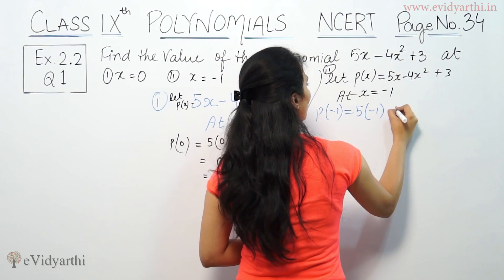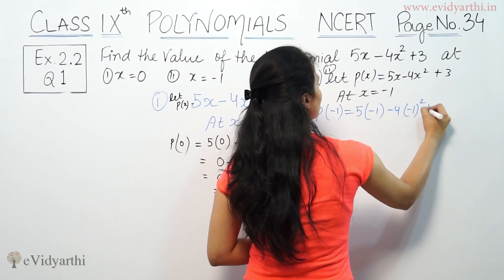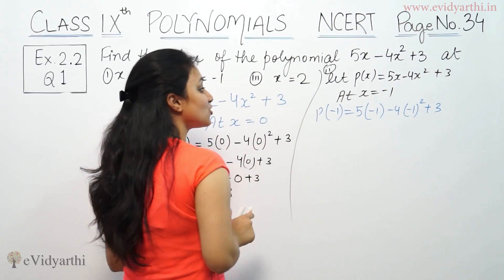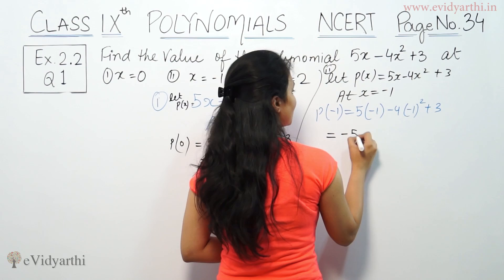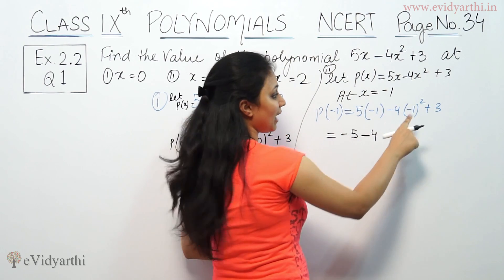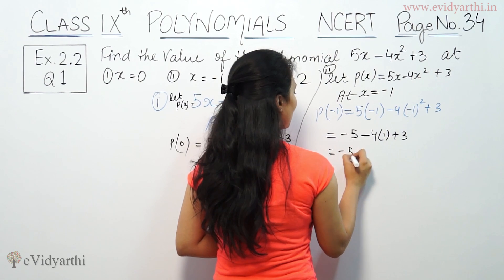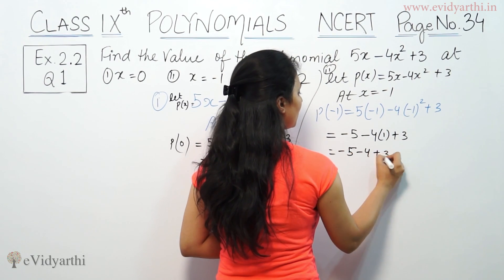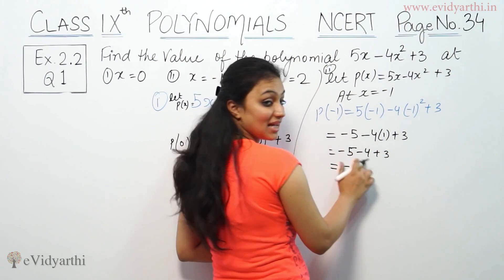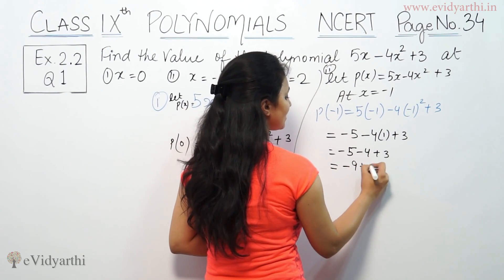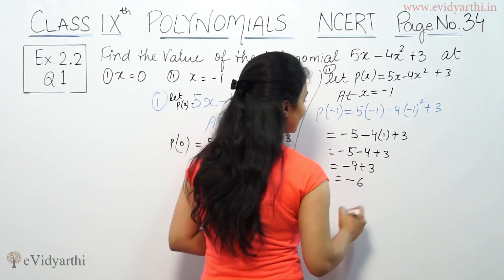So 5 times minus 1 minus 4 times minus 1 squared plus 3. So 5 into minus 1 is minus 5 minus 4, minus 1 squared is 1 plus 3. So minus 5 minus 4 plus 3, which is minus 9 plus 3 equals minus 6.